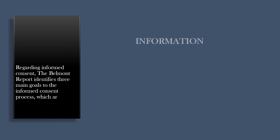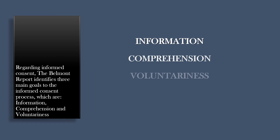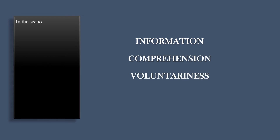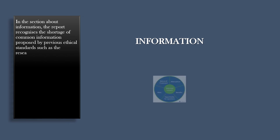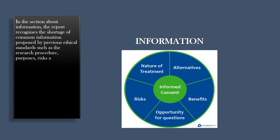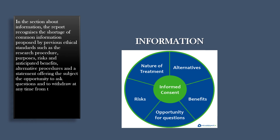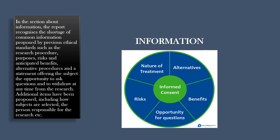Regarding informed consent, the Belmont Report identifies three main elements of the informed consent process: information, comprehension, and voluntariness. In the section about information, the report recognizes the need for common information proposed by previous ethical standards, such as the research procedure, purposes, risks and anticipated benefits, alternative procedures, and a statement offering the subject the opportunity to ask questions and to withdraw at any time from the research. Additional items proposed include how subjects are selected and the person responsible for the research.